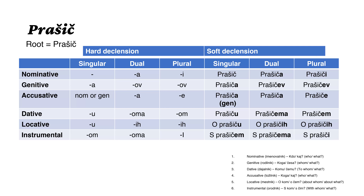So if somebody asks what am I talking about, I'll say 'O prašičih — o kom govorim? O čem govorim? O prašičih.' And if I want to say I see pigs, I'll say 'Vidim prašiče.' And so on.